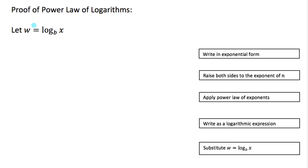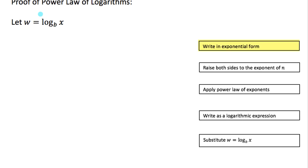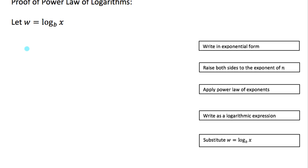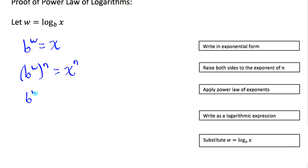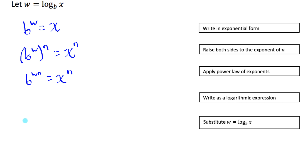Let's say we have the expression w equals log base b of x, where w and b are some numbers and x is our variable. Let's rewrite this equivalently in exponential form: b to the power of w equals x. Next, raise both sides to the power of n — as long as we do it to both sides, we're allowed to do that. So we get b to the w to the n equals x to the n, and the power law of exponents tells me I can multiply the exponents: b to the power of w times n equals x to the n.